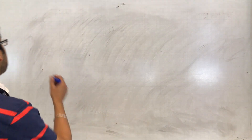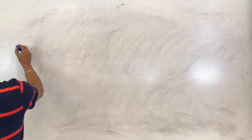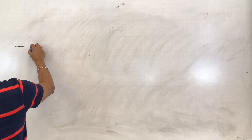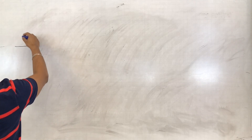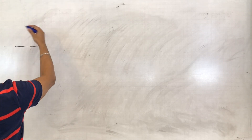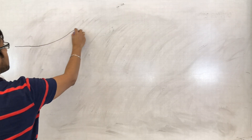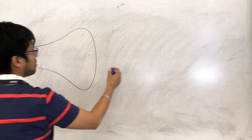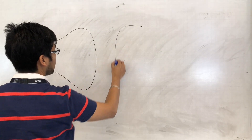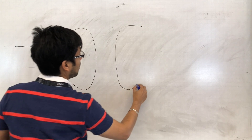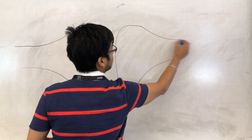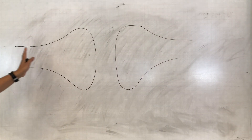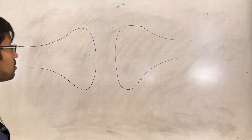Synapses. Talking about the events of action potentials — the action potential is propagating along the axon, then it's going to get to the end of the axon, where it is going to synapse, potentially, with another neuron.